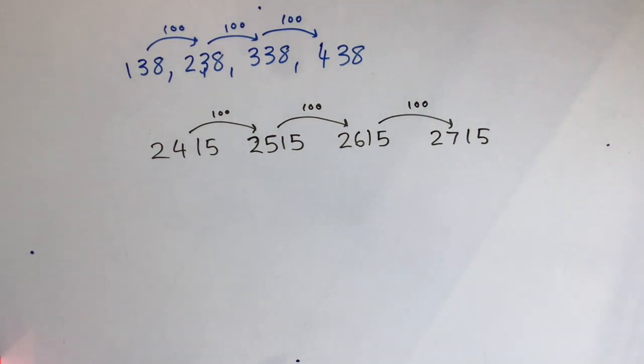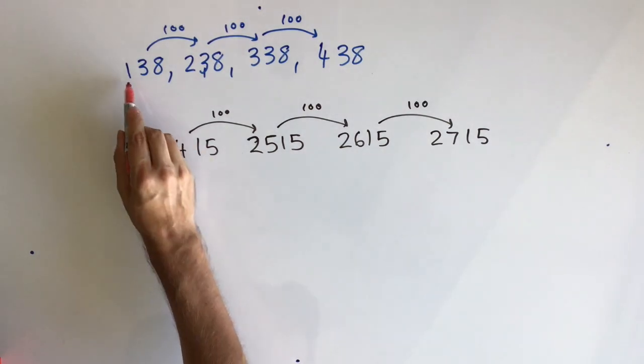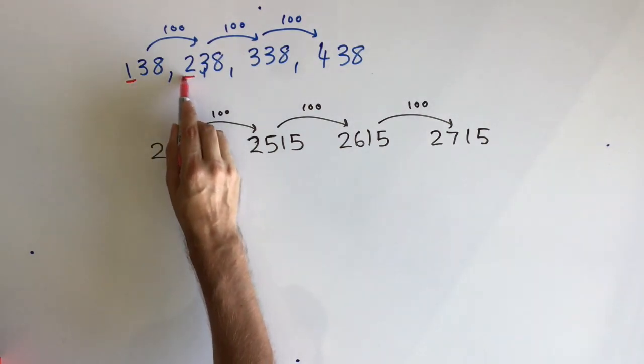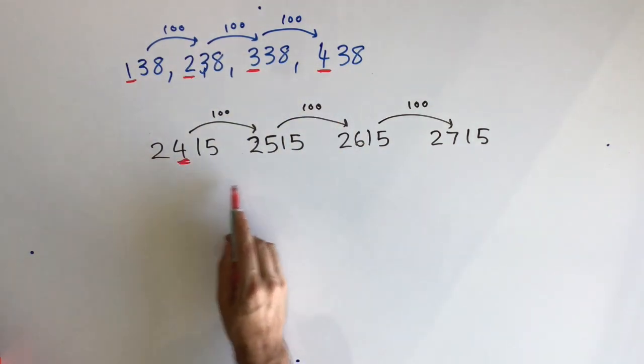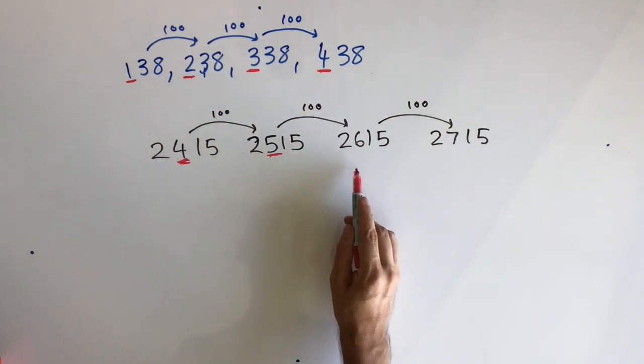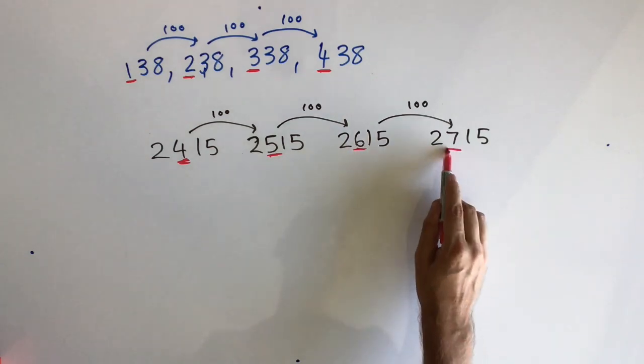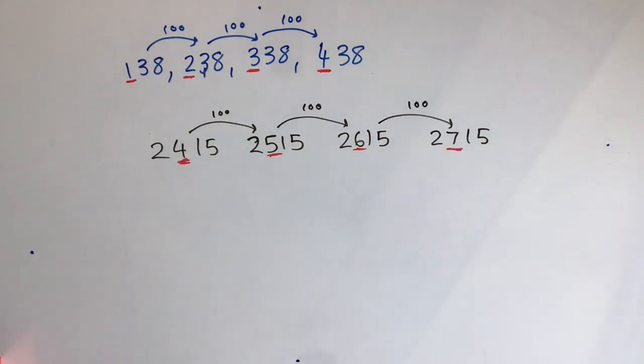Can you see where the number is that's changed or stayed the same every single time? Hopefully what you noticed is that instead of the tens number changing every time, like when we counted in tens, now it's the hundreds number. So we have 100, 200, 300, and 400. Here we had 2400, 2500, 2600, and 2700. So when you count in one hundreds, the one hundreds number goes up by a value of 100 every single time.